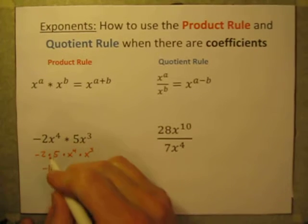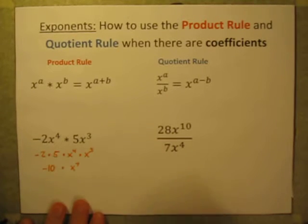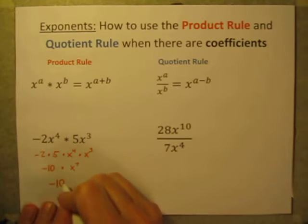So this is going to be x to the 7th power. So this whole thing can simplify down to negative 10x to the 7th power.